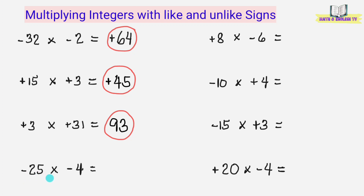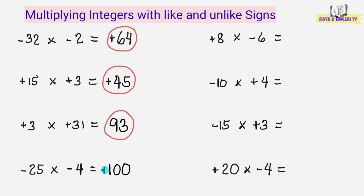Negative 25 times negative 4. I-multiply natin: 25 times 4 equals 100. Parehong negative yung sign ng ating iminultiply, kaya yung product dapat ay positive integer. Lagyan natin ng positive sign — o pwede rin hindi natin lagyan ng positive sign, parehong tama yan. Yung answer ay positive 100 o 100.